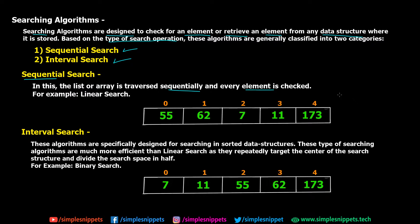As you can see from the diagram, we have an array data structure with five elements: 55, 62, 7, 11, and 173. When it comes to sequential search, let's say we want to search for the element 7. We will start from one end of the array — let's say index zero. We will access that position and check if 7 equals 55. It is not equal, so we move on to the next element.